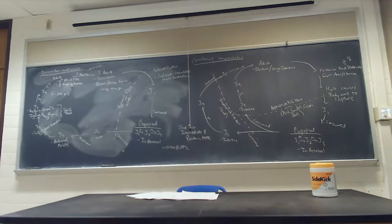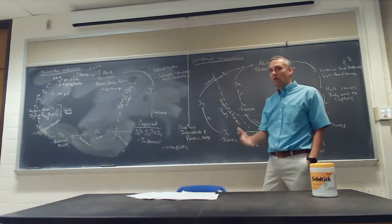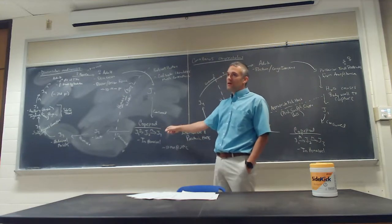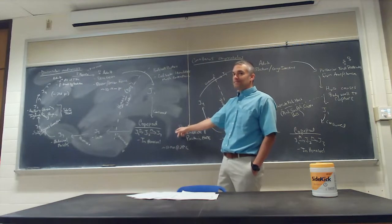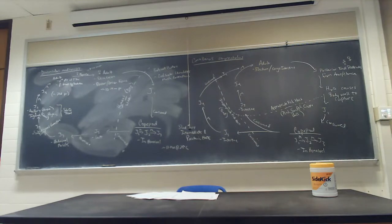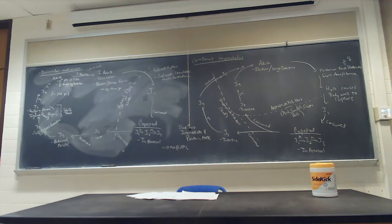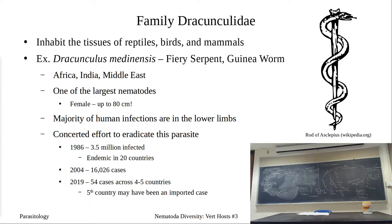The pathology plays a key role in transmission: the burning blister makes the individual seek water, and if that water has copepods, transmission can occur. The cool water also stimulates muscle contractions to release J1s. We may finish the remaining nematodes on Wednesday — briefly covering pathology of Dracunculus, how we've nearly eliminated it, and then Wuchereria and Onchocerca, which we'll look at in the lab. Don't forget to send me your presentations.